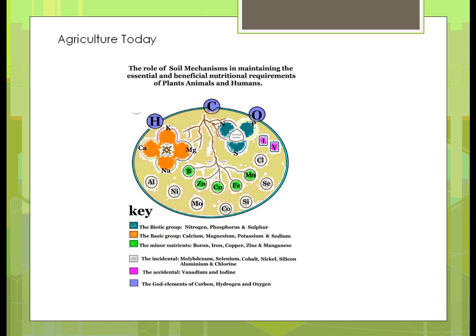Here's an example of the different types of elements. The top ones are H, C, and O — carbon, hydrogen, and oxygen — from the atmosphere. Those are what they call the God-created elements; they're everywhere. Then you have the biotic group. There are synthetic versions we put on as fertilizer — NPK, nitrogen, phosphorus, and sulfur — but biotic means it's living. These are things that are in the soil, or certain plants put them back into the soil as they grow.